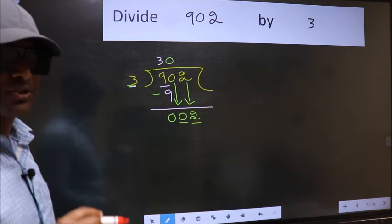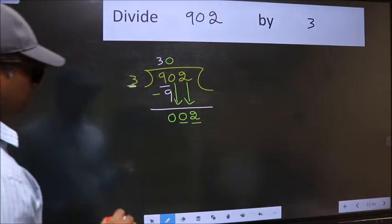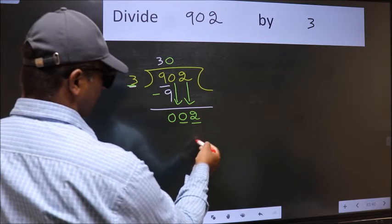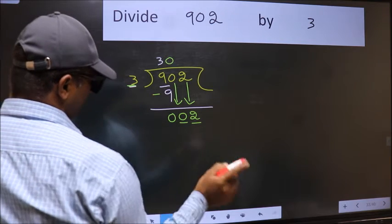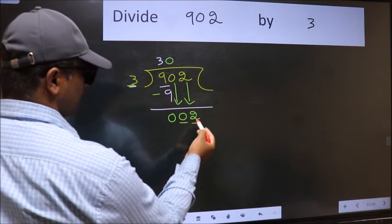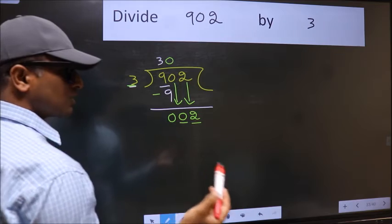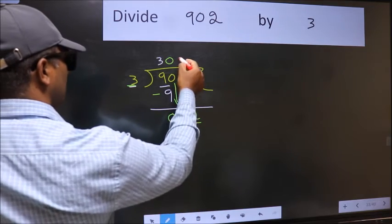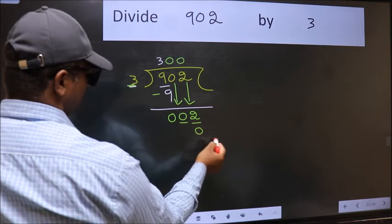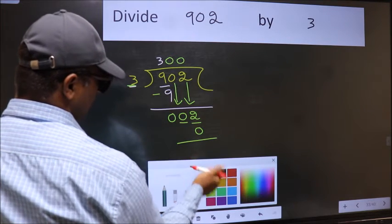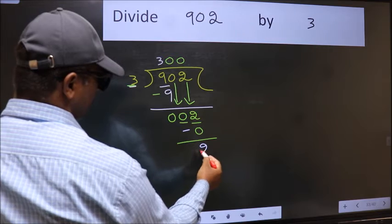Instead, what you should think of doing is, which number should we take here? If I take 1, we will get 3, but 3 is larger than 2. So what we should do is we should take 0. So 3 into 0, 0. Now we should subtract. 2 minus 0, 2.